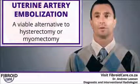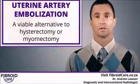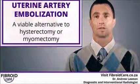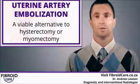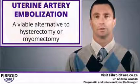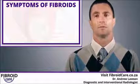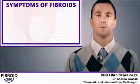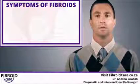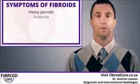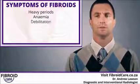Fibroids are common benign growths of the uterus. They actually start from a single muscle cell in the uterine wall and can grow and cause symptoms by either affecting the lining of the womb, in which case they cause heavy periods, anemia and debilitation.